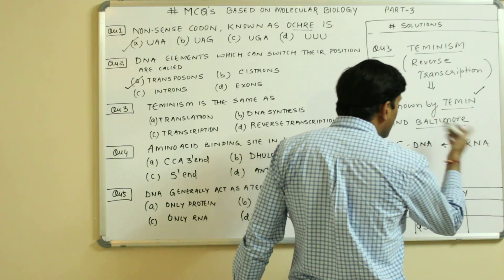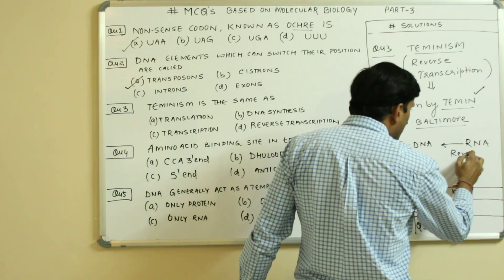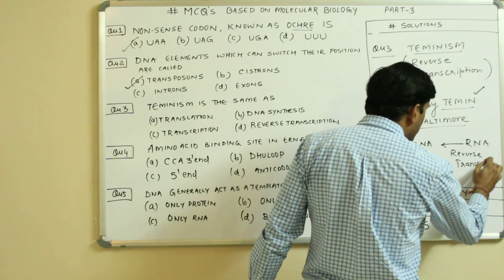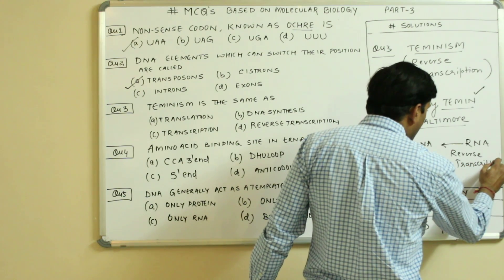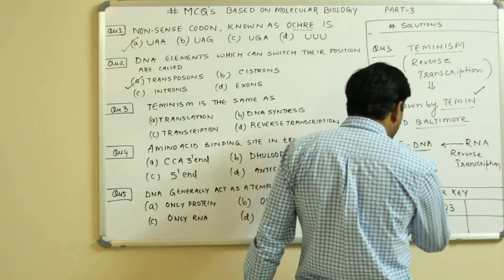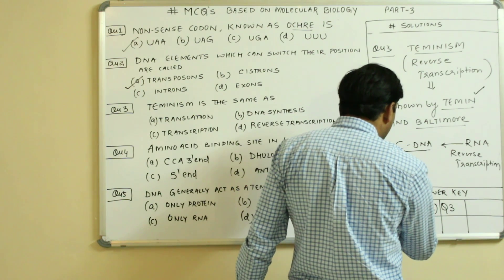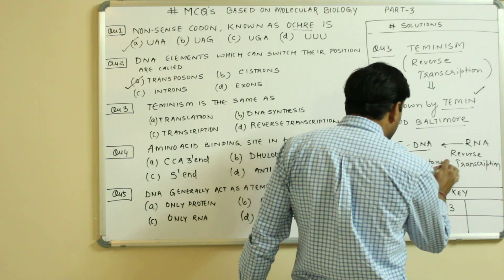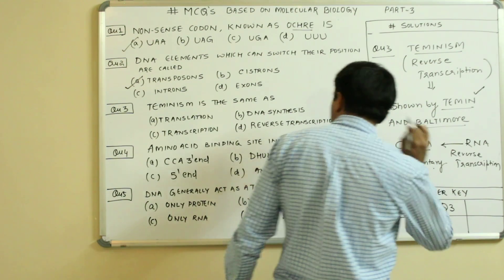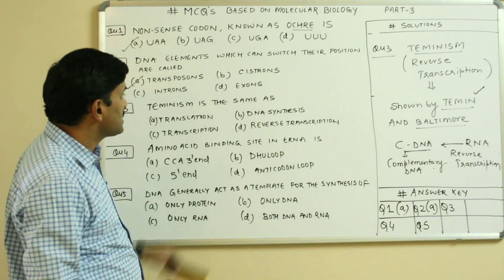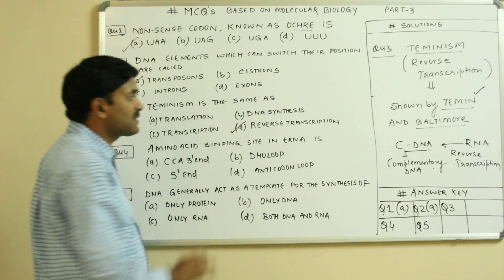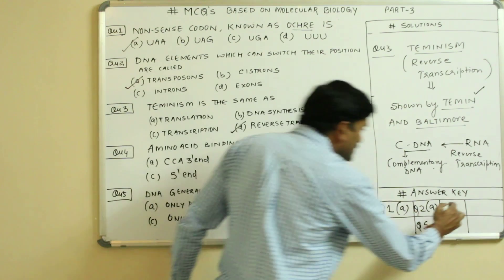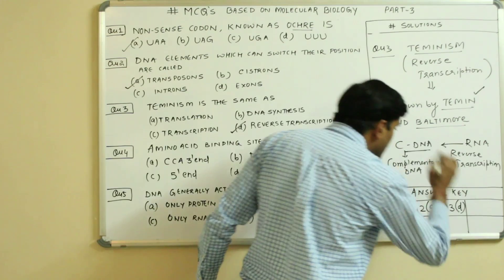RNA can form DNA by reverse transcription, and the DNA which is formed is complementary DNA. So Teminism is the same as reverse transcription. Question number three is having the answer D.